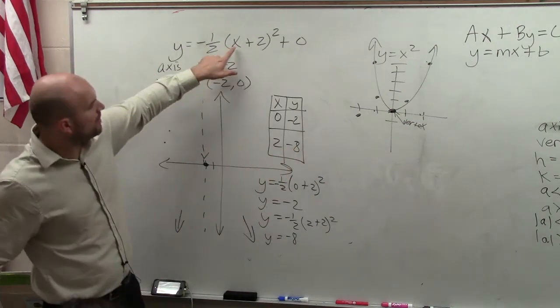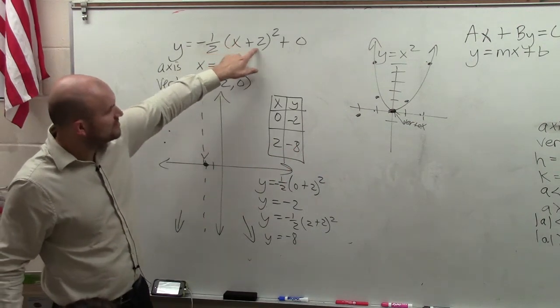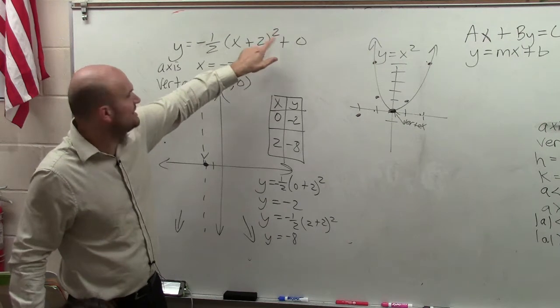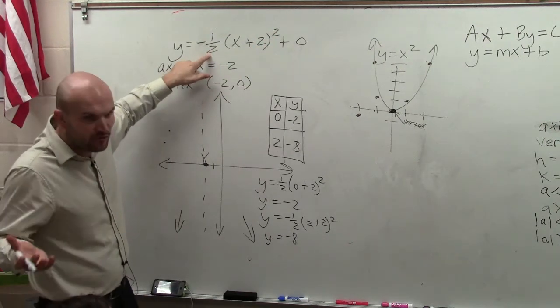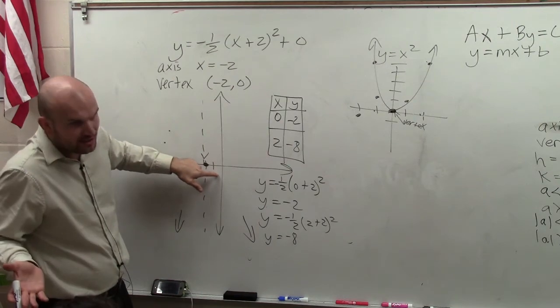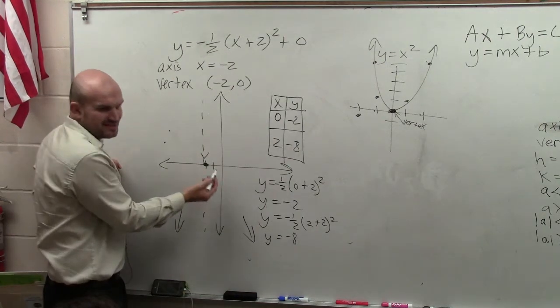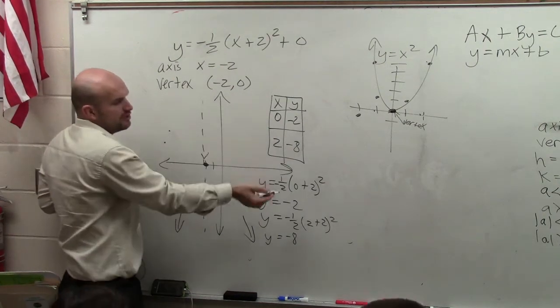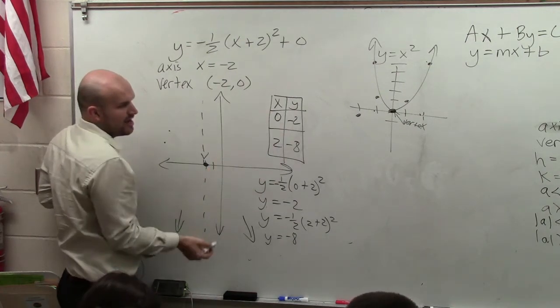Do you guys see how it might be a problem if I chose 1? 1 plus 2 is 3. 3 squared is 9. 9 times negative 1 half is negative 4.5. You can graph negative 4.5, right? It's not hard. But it's just going to be like, it's not an integer. So I prefer to use numbers that are going to make us have integers.